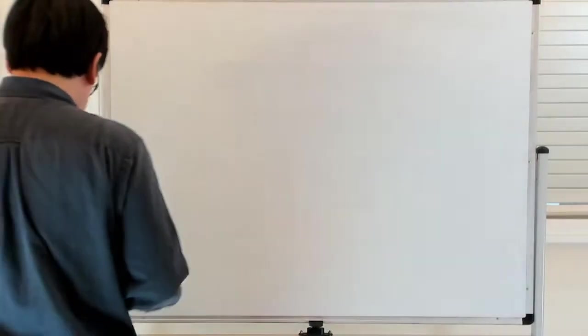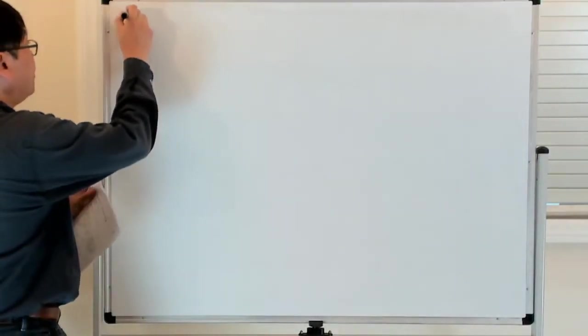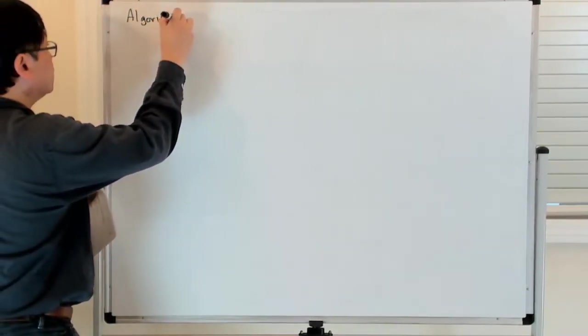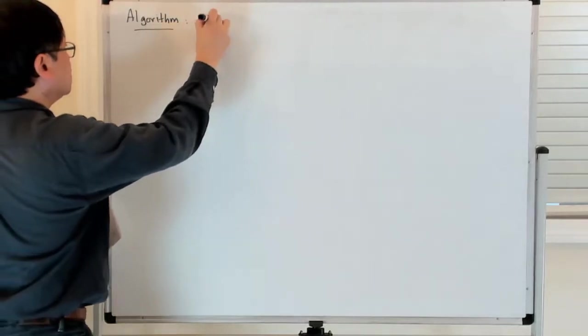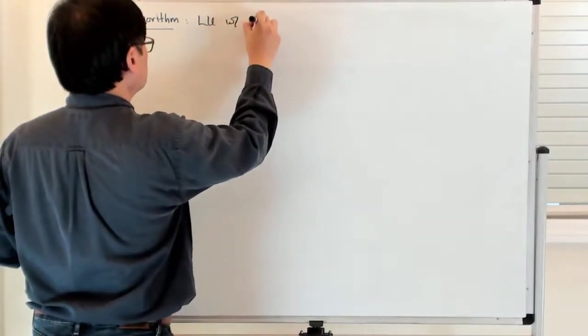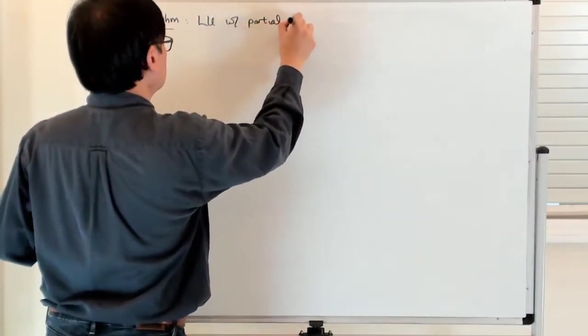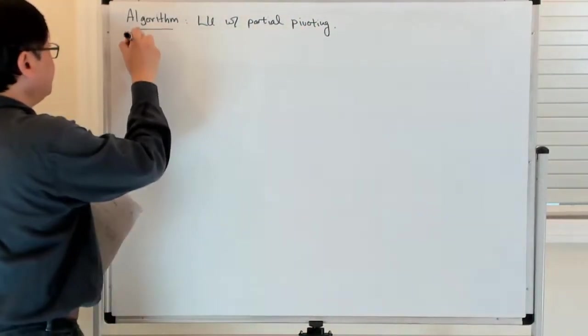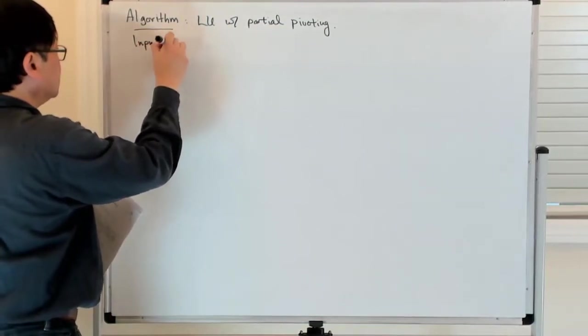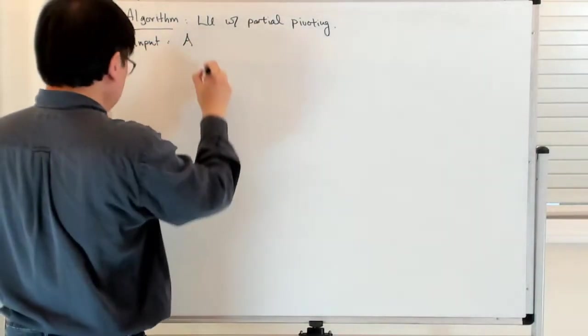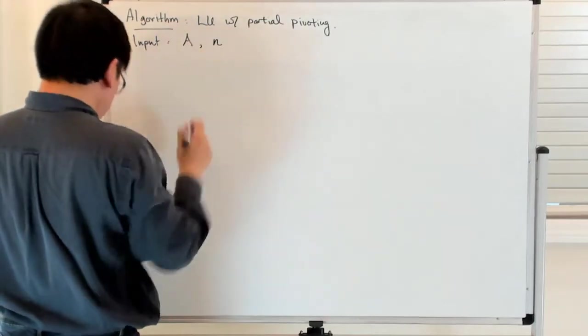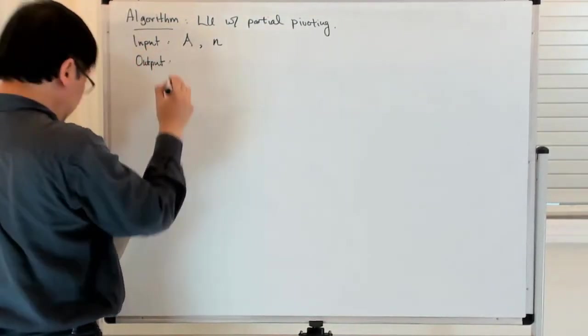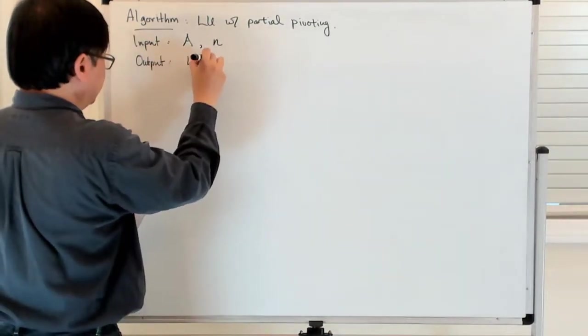All right, so now I'm going to talk about the algorithm for LU with partial pivoting. We have two inputs, which is the matrix A and its dimension N.